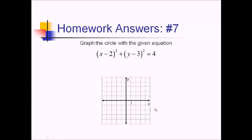For number 7, we want to graph this equation, which is a circle. The center is (2, 3) and the radius is the square root of 4, which is 2. So plotting (2, 3), we go 2 in every direction — up 2, right 2, down 2, and left 2 — and connect the dots. And there's our circle.